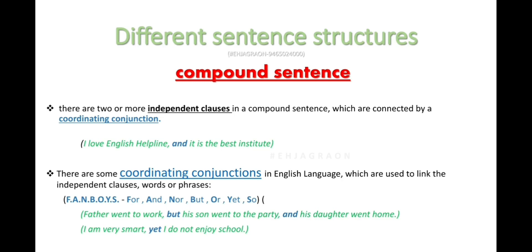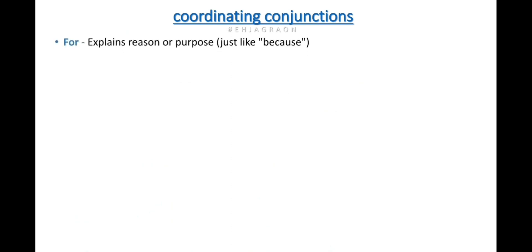Another example: 'I am very smart, yet I do not enjoy school.' This is a complete thought with two sentences joined together. Now, the coordinating conjunction 'For' explains reason or purpose. Example: 'Government has constructed a new hall, for it was needed to make a library' — here 'for' works like 'because.'